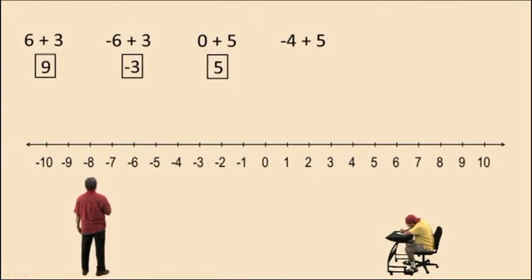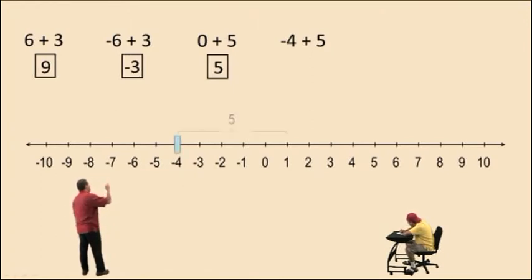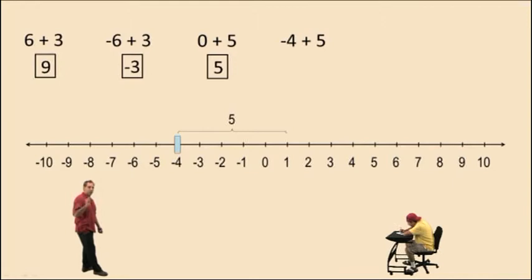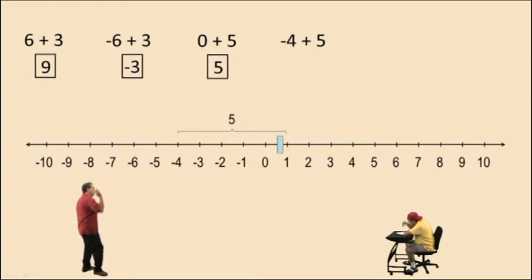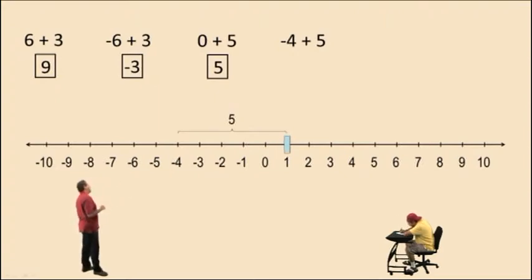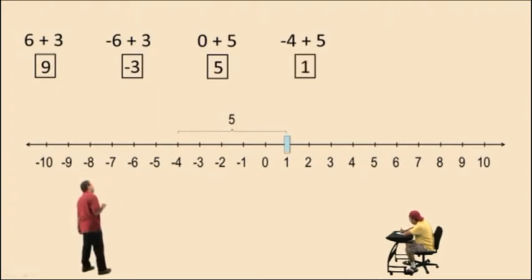Let's look at negative 4 plus 5. We start at negative 4 and we move to the right 5 units, but notice we're going to pass the 0. Because once we move 4 units to the right, we're at 0, and we still have to move 1 more to move a total of 5 units to the right. So our answer is positive 1.